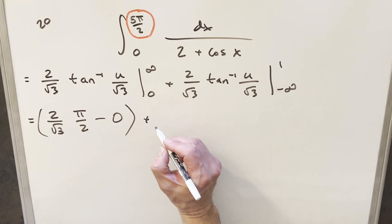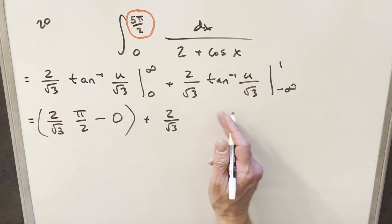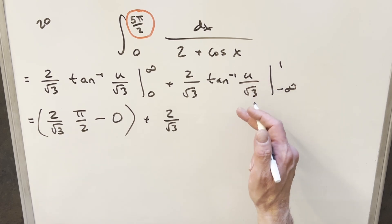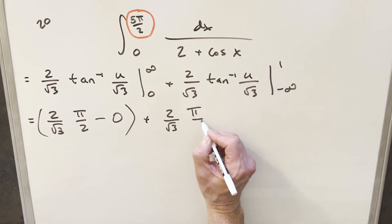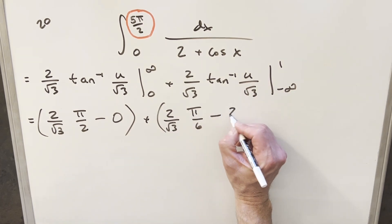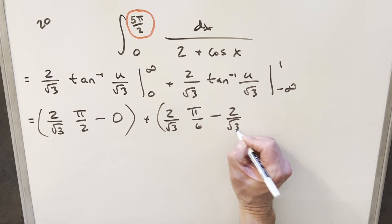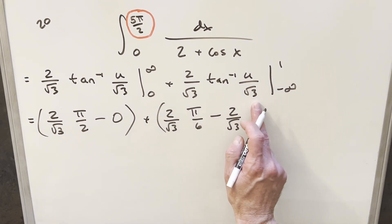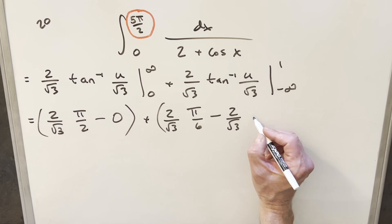Then coming over here to our second integral, we're going to have 2 over square root of 3. Arctan of 1 over square root of 3, that's just going to be π over 6 there. Then minus, we'll distribute in 2 over square root of 3. Then we'll have arctan at minus infinity. The square root of 3 won't change it. So arctan at minus infinity, that's just going to be minus π over 2.